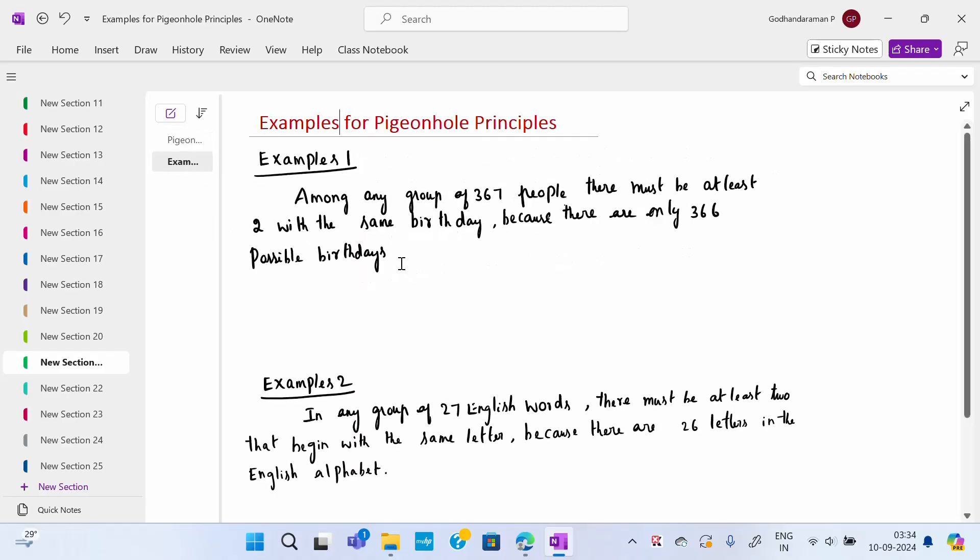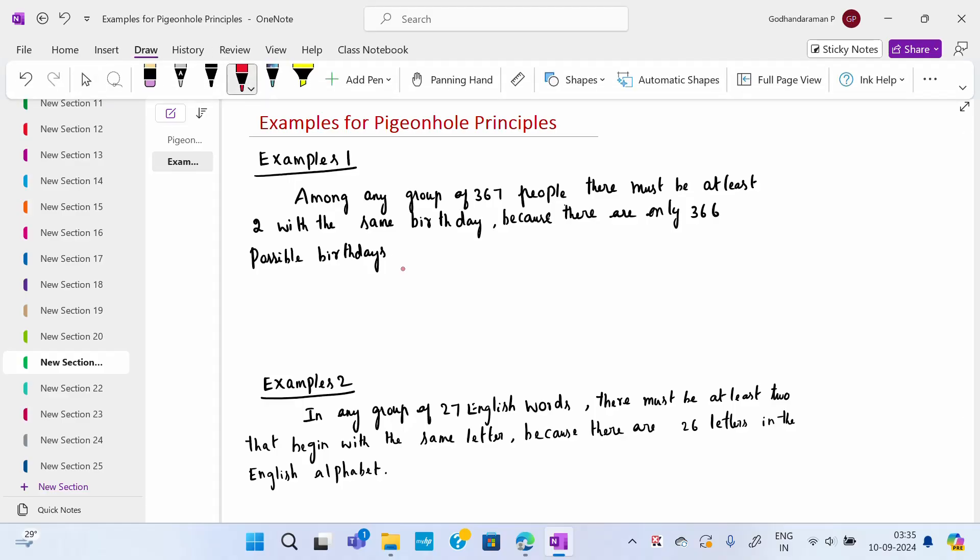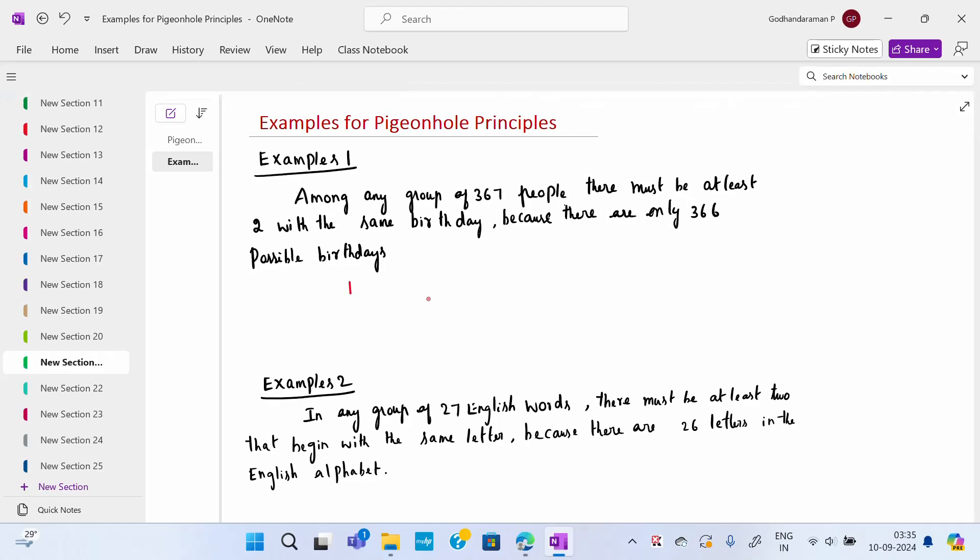For pigeonhole principle, the first example: among any group of 367 people, there must be at least two with the same birthday. Two persons may have the same birthday because there are only 366 possible birthdays. So how many pigeons are there? Pigeon means overall total, so it's 367 people is the pigeon. Pigeonhole in this, 366 birthdays.